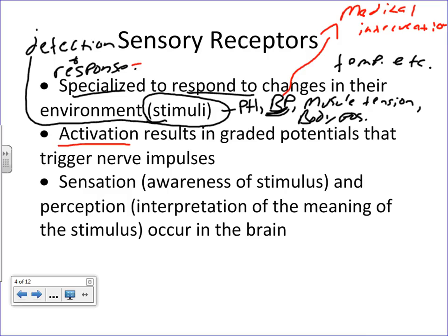These receptors are activated as a result of graded potentials, which we described as local irritations. These graded potentials may not always activate an action potential, but if they are strong enough, that sensory neuron will start generating action potentials from the nerve to the central nervous system, and then we'll figure out what the stimulus is and carry out the appropriate response.